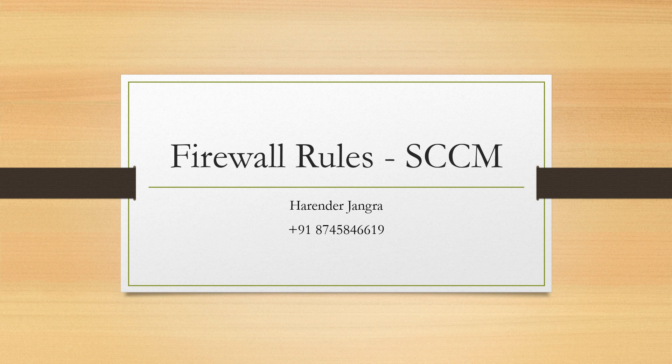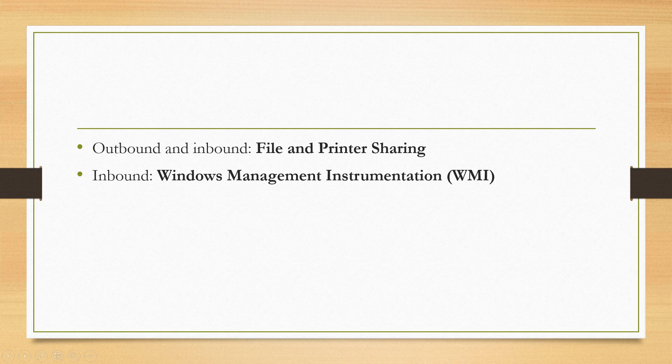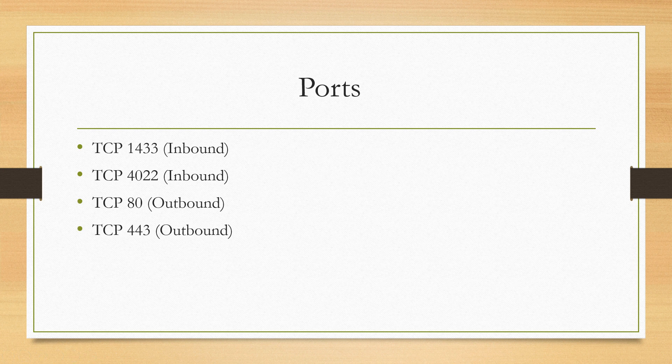Through Active Directory Group Policy, we have to create some inbound and outbound rules. File and Printer Sharing is a predefined rule and we have to allow it for both outbound and inbound. In inbound we also need to allow WMI only — we don't need to create outbound rules for WMI. There are also some ports we have to allow: TCP 1433 and 4022 for inbound, and these ports we also have to allow for outbound. Let's go to our SCCM server.